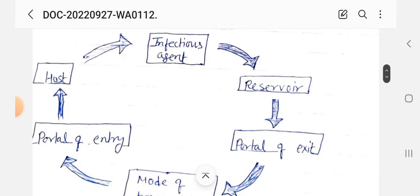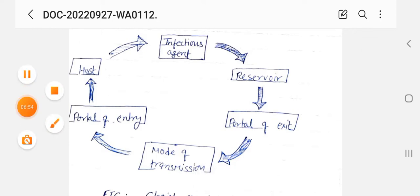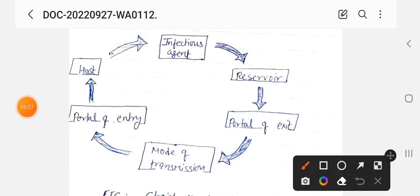First देखते हैं infection cycle का diagram। Infectious agents और pathogens — इसमें bacteria, virus, fungi, and protozoa आते हैं। Second, reservoir means जहाँ पर infectious agents, pathogens अपनी संख्या में बढ़ी करें, महाँ पले बढ़ें।